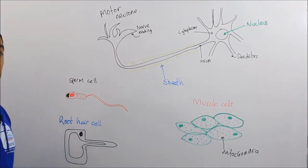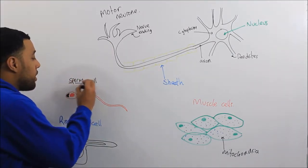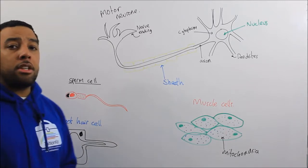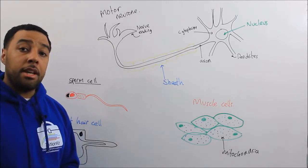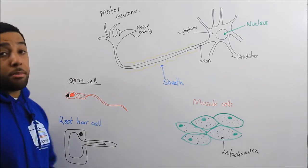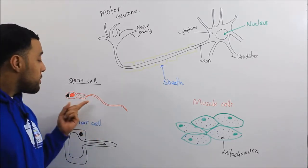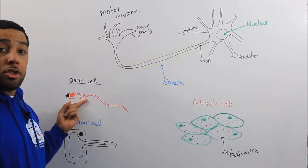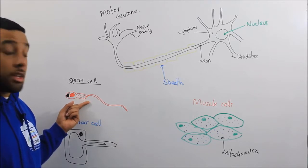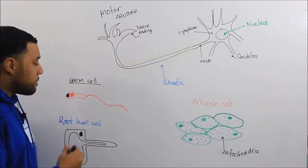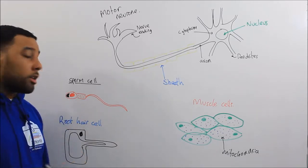We've also got a sperm cell. You will be expected in your exam to explain the role and the structure of this sperm cell. The sperm cell's job is to swim to the egg, to fertilize the egg. And the sperm cell has three separate parts.